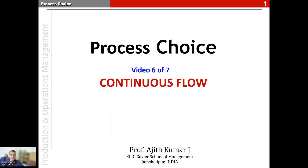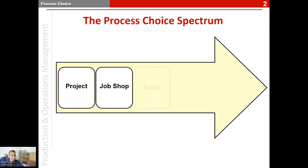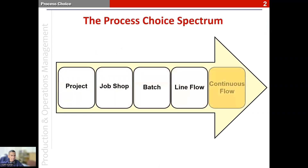This is the sixth of seven videos on process choice. In this video, we look at the continuous flow process, which is the fifth of the five process types represented on the process choice spectrum.